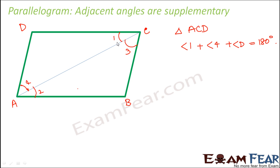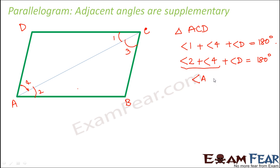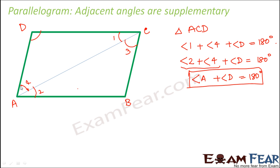Since AB is parallel to CD, angle 1 is equal to angle 2 - they are alternate angles. So instead of angle 1 we can write: angle 2 plus angle 4 plus angle D equals 180 degrees. Now angle 2 plus angle 4 is nothing but angle A. Therefore angle A plus angle D equals 180 degrees. Angle A and angle D are adjacent angles, so their sum is 180 degrees - they are supplementary.